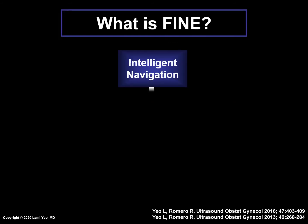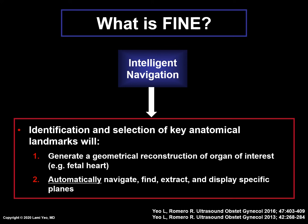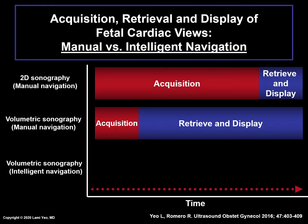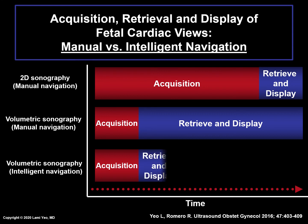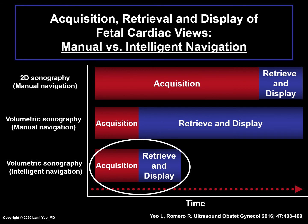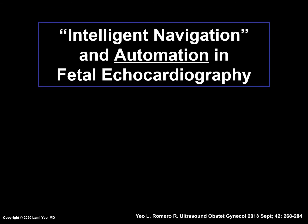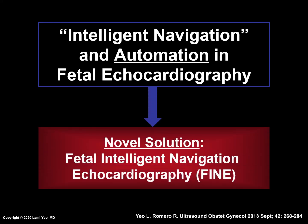By identification and selection of key anatomical landmarks, the system will generate a geometrical reconstruction or model of the organ of interest, and then automatically navigate, find, extract, and display specific planes such as the cardiac planes. The clear advantage of intelligent over manual navigation in volumetric sonography is the short time required for both cardiac volume acquisition, as well as retrieval and display of cardiac views, which is performed automatically. When combined with fetal echocardiography, fetal intelligent navigation echocardiography, or FINE, is the end result.